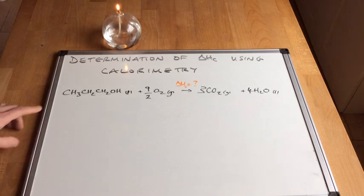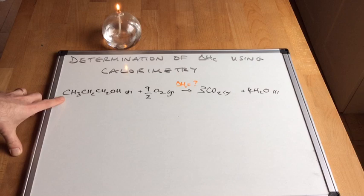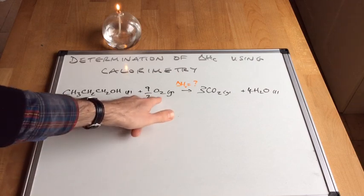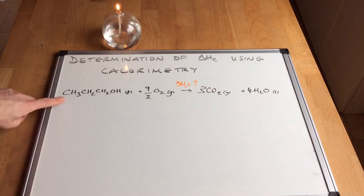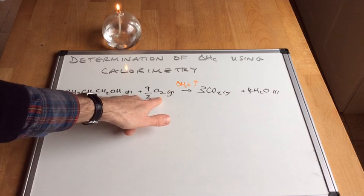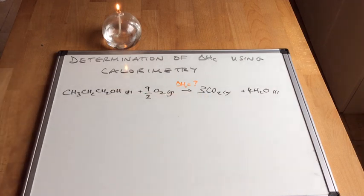We've got the equation there for the enthalpy change of combustion. Remember this is the enthalpy change when one mole of a substance reacts completely with oxygen under standard conditions. So we've got the propane-1-ol reacting with 9/2 moles of O2 producing 3 CO2's and 4 H2O's.